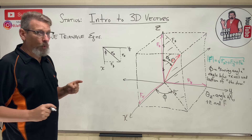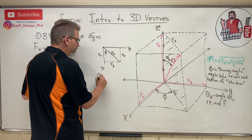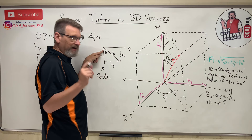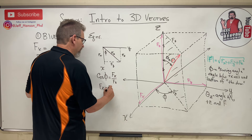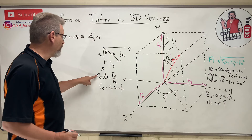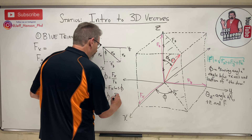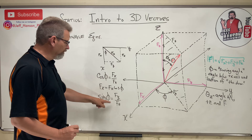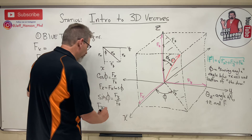For this top-down triangle, cosine of phi equals adjacent over hypotenuse, so Fx over Fh. Rearranging: Fx = Fh·cos(phi). For sine: sine of phi equals opposite over hypotenuse, so Fy over Fh. Rearranging: Fy = Fh·sin(phi). So there are two nifty equations for Fx and Fy.